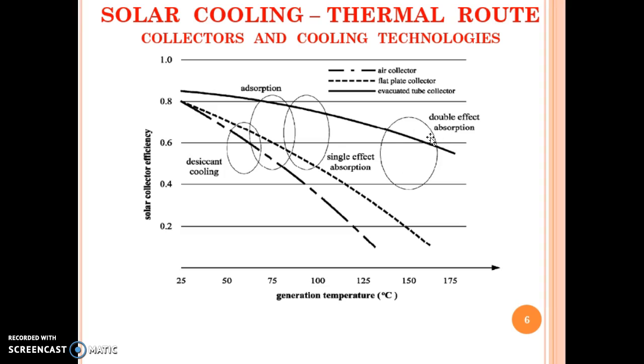Double effect absorption gives you higher COP, but then the solar collector efficiency is somewhat lower as compared to the low temperature single effect absorption process.